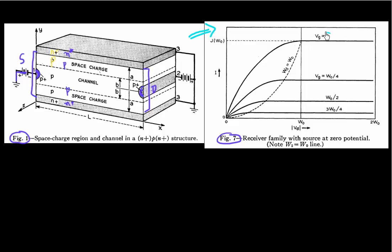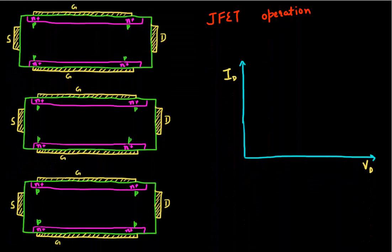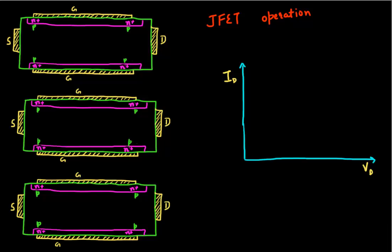Let me illustrate taking the case at gate voltage equal to zero first. I've drawn a 2D cross section of my device. As you can see, there are two PN junctions over here — that's where the junction in the JFET comes from. There's an N-plus P junction over here, and there's another N-plus P junction over here.